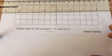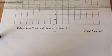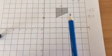The question is enlarge shape T with the scale factor minus 1.5 from the centre 0, 2. Okay, and I've just written those down there to help us with the shape.